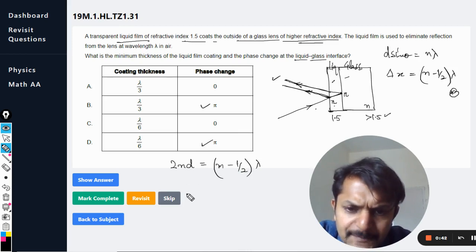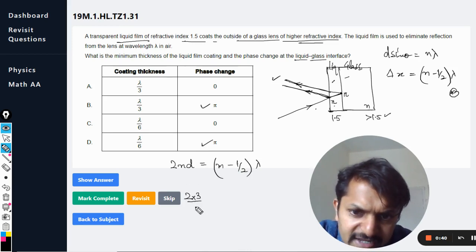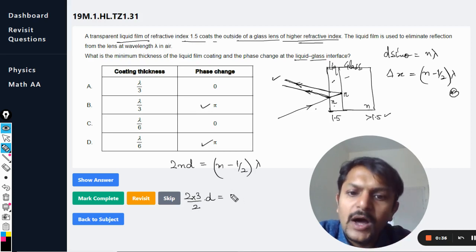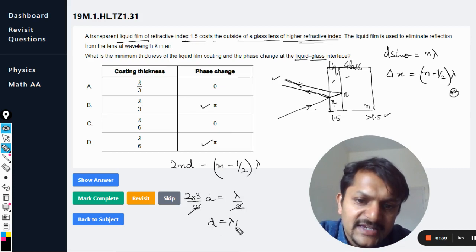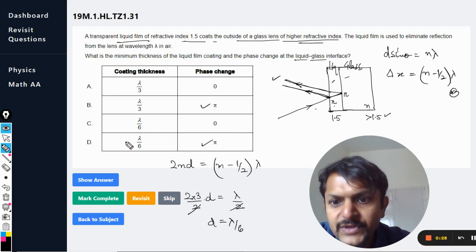And for the minimum case, it will be 2 times refractive index 1.5 times d. m will be taken as one, so it will be wavelength divided by 2. This 2 and 2 gets cancelled, this is 6, so d is equal to lambda by 6. And hence, capital D is the correct answer.